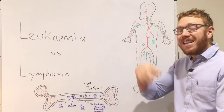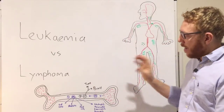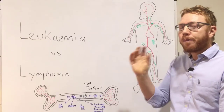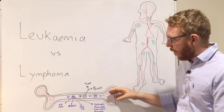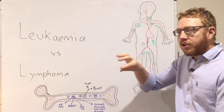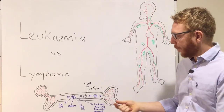So these cells are constantly copying. When there is a cancer or a problem at a genetic level, that means this stem cell just gets turned on constantly.